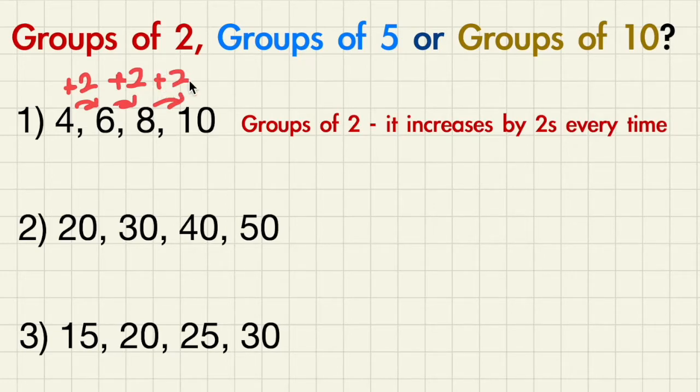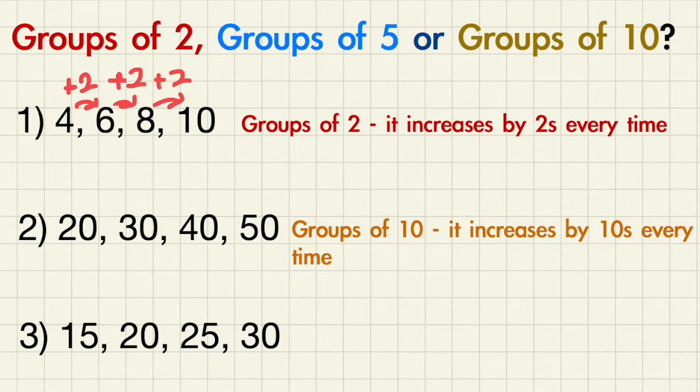For the second question, it is increasing by 10s every time. This is because 20 plus 10 is 30, 30 plus 10 is 40, and 40 plus 10 is 50.